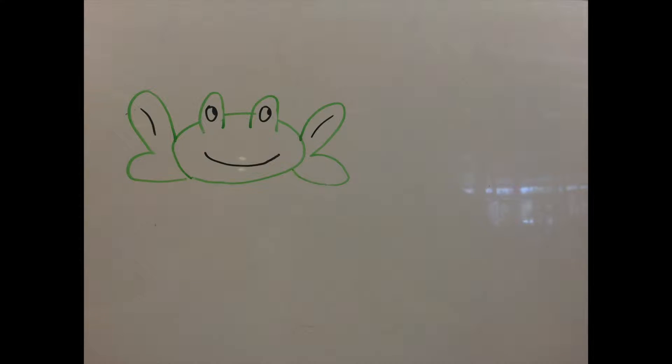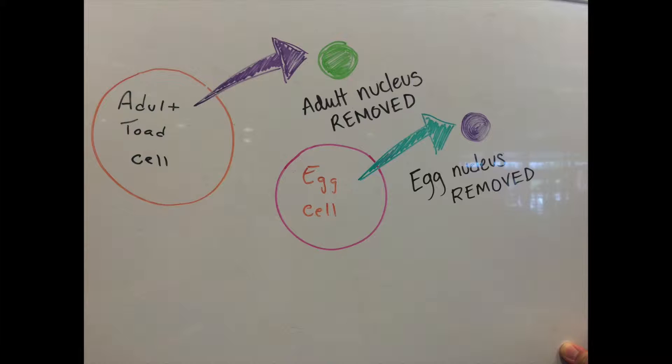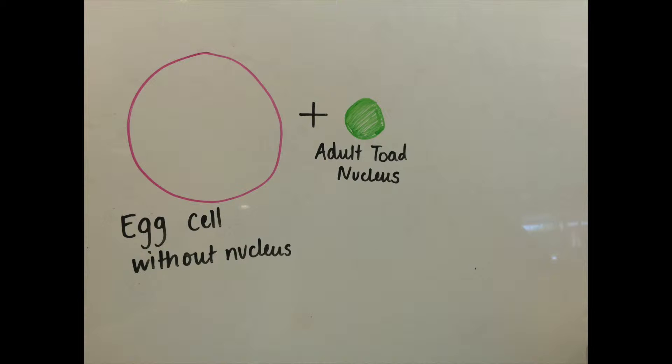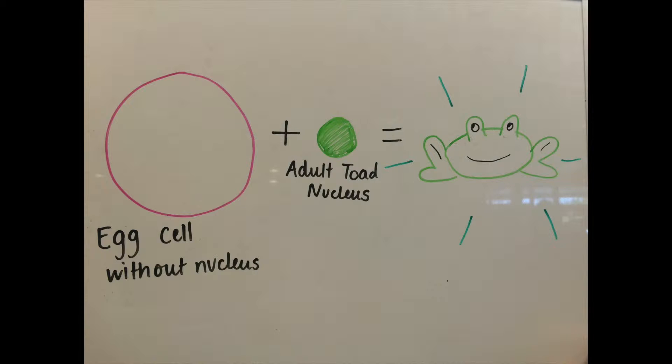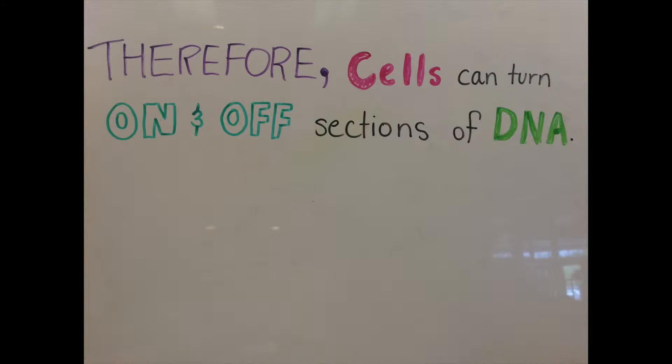John Gordon decided to tackle the problem. He took a differentiated cell out of an adult toad and removed its nucleus. Then he took a toad egg and removed its nucleus. Using a process called cell nuclear transfer, he placed the differentiated cell's nucleus into the egg. Although most cells ended up dying, some actually developed into baby toads. Since an embryo develops from stem cells, John Gordon just proved that cells can turn on and off sections of DNA.